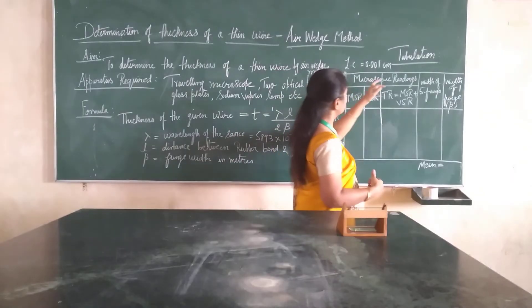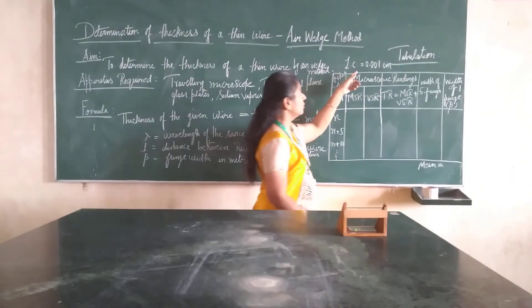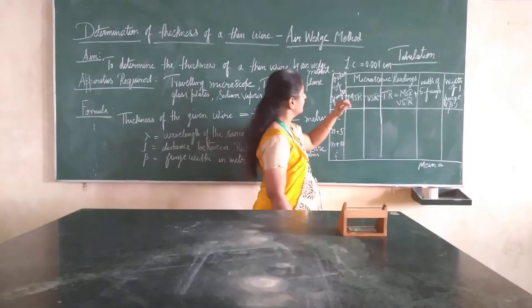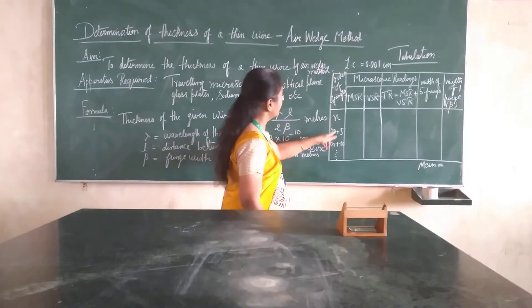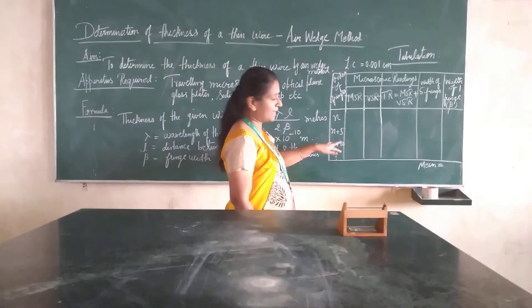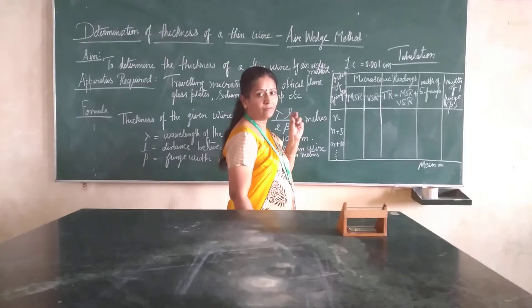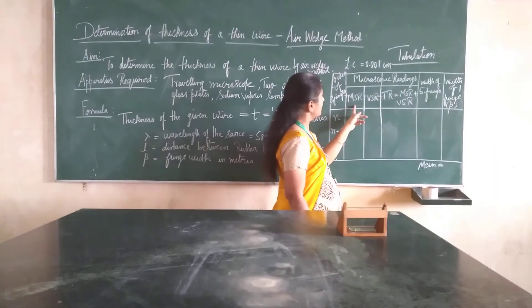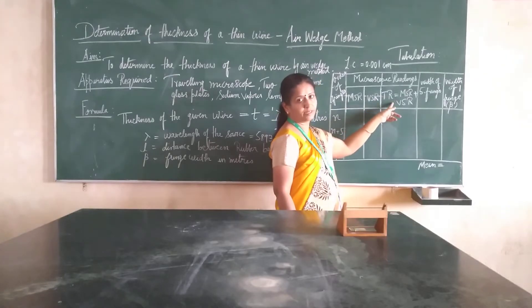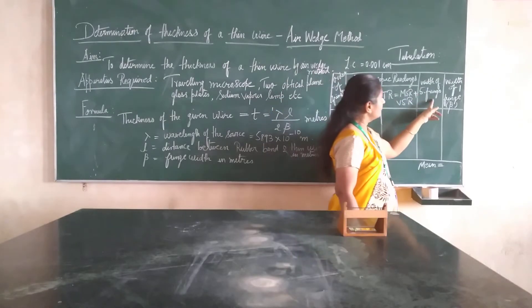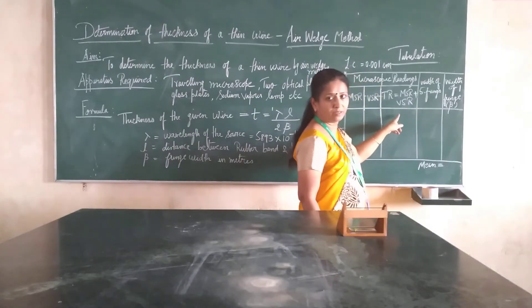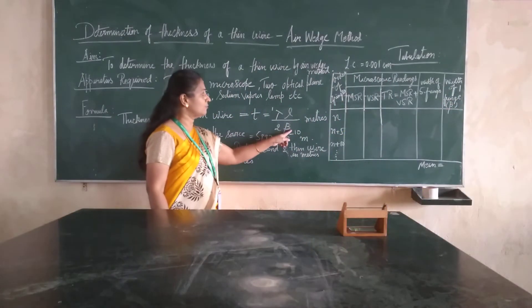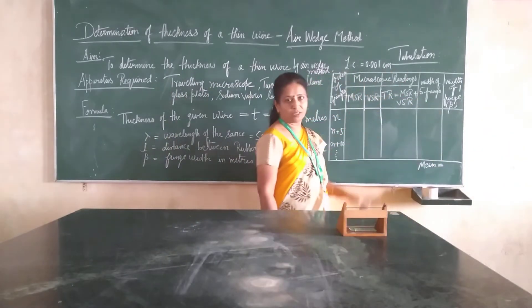Before we get into the procedure, let me explain the tabulation. The least count of the traveling microscope is 0.001 centimeters. We will be fixing the order of the fringes as N, N+5, N+10, and so on, until we have a clear image of the pattern. The microscope readings are divided into MSR, DSR, and total reading. The width of 5 fringes is calculated from the total readings, and the fringe width beta is then calculated and substituted into the formula.